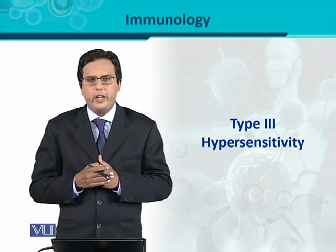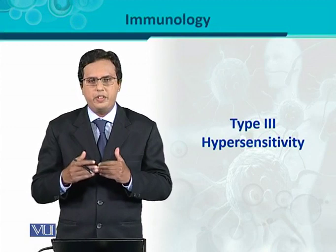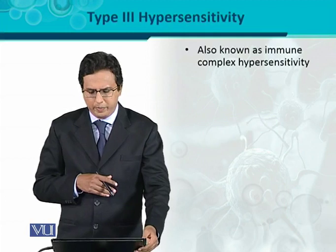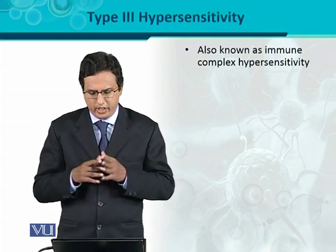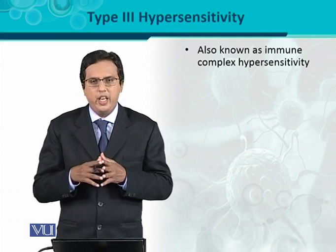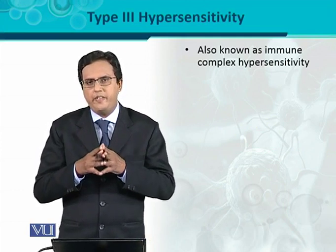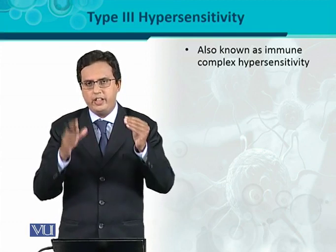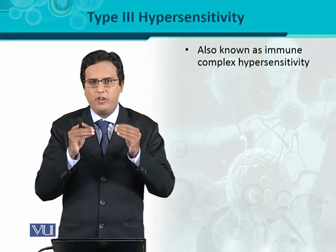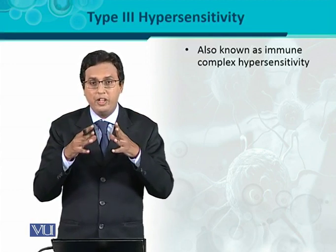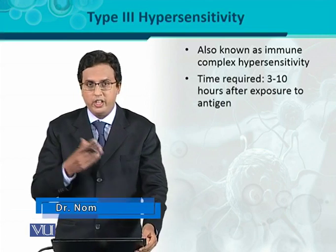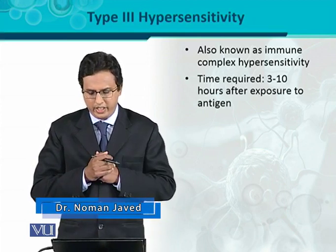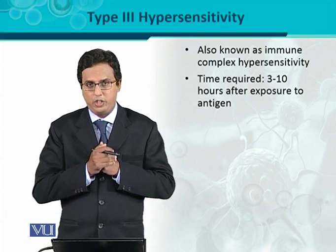Type 3 hypersensitivity is the third important type of hypersensitivity reaction, which involves over-reactivation of the immune system. Another name for type 3 hypersensitivity is immune complex hypersensitivity. An immune complex is formed whenever an antigen-antibody reaction occurs, and it exists in soluble form — it is not fixed on certain cells. The time required for this reaction is usually 3 to 10 hours after exposure to the antigen.